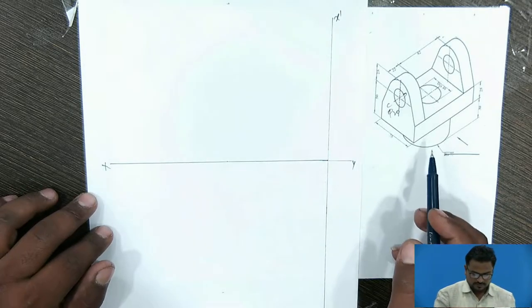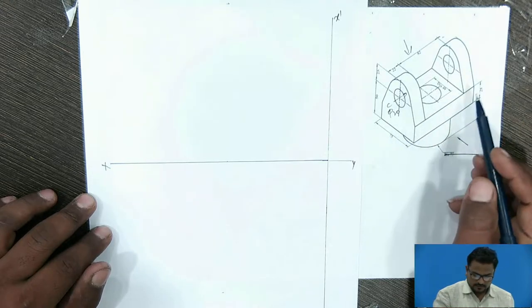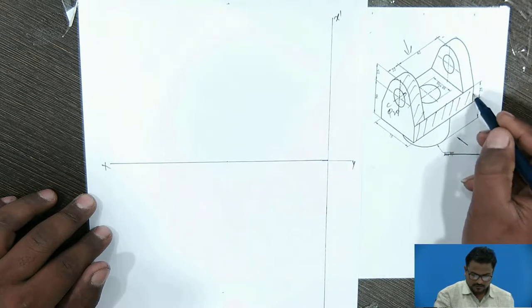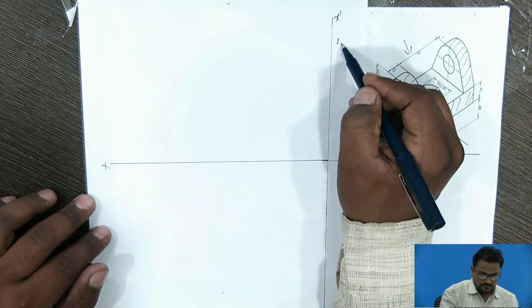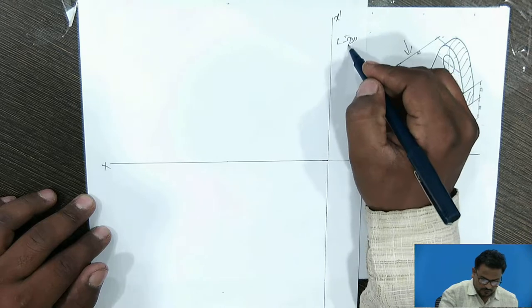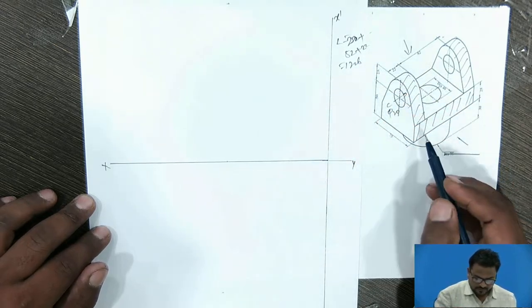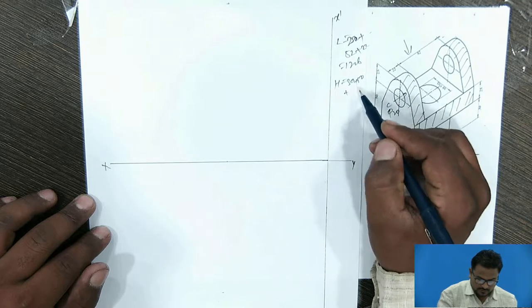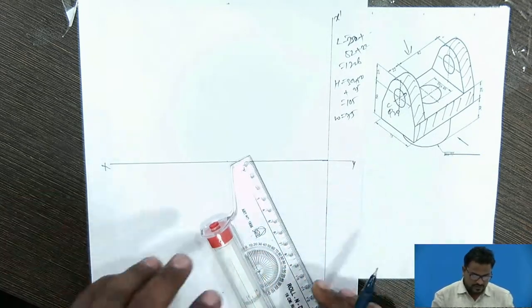This is the simple object which I have selected. We are going to see the front view and the top view. The length is equal to 22 plus 82 plus 22, that is equal to 126 mm. Height h is equal to 30 plus 50 plus 25, that is equal to 105 mm. And width is given as 75 mm. I am going to take this height, length, and width.